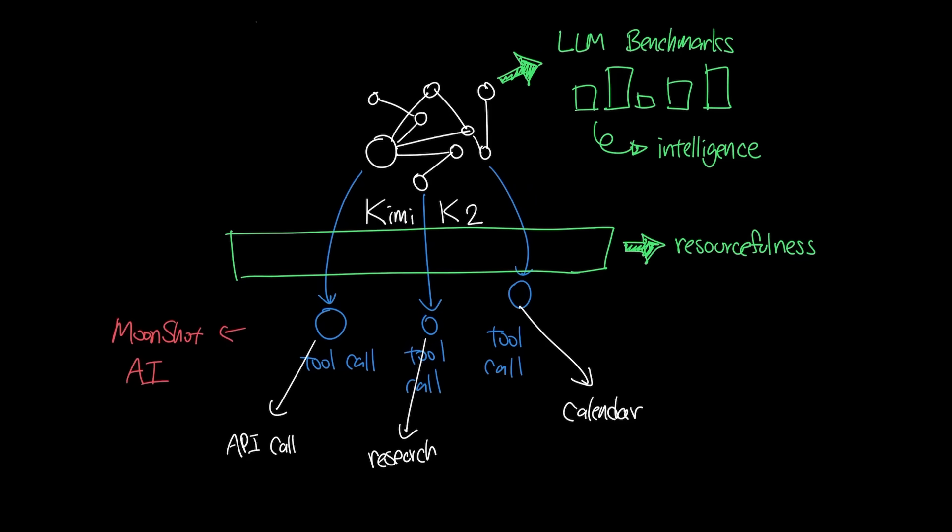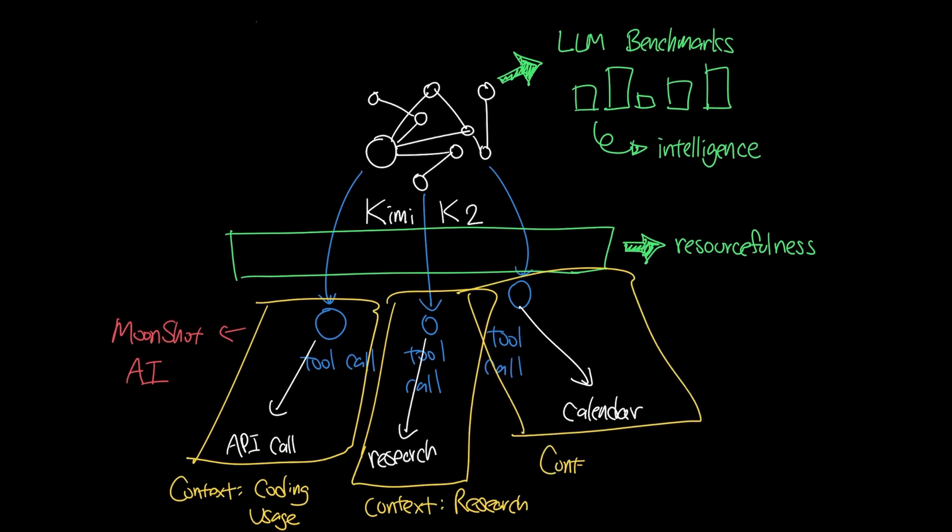Moonshot recognizes and specifically trained Kimi K2 on simulated tool usage to learn how to be resourceful in calling the right tools for different purposes and different contexts. And this will pay huge dividends as the industry is shifting towards MCP and A2A or agent-to-agent networks, which requires a lot of external reliance.